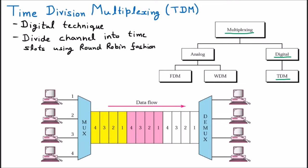To understand round robin, we are looking at this diagram. Let us suppose we are having three computers: C1, C2, C3 and one more computer C4. They are sending data and this data is multiplexed. Earlier in frequency division multiplexing, the frequencies are merged. In wave division multiplexing, lights are merged using a prism. Now, this is a digital technique. This is the medium or the line through which the data is passing.